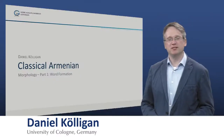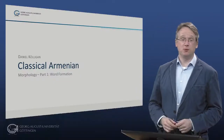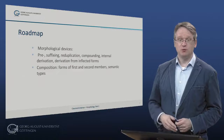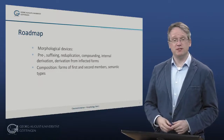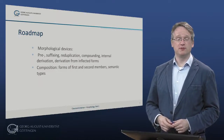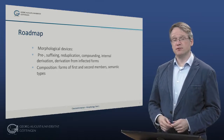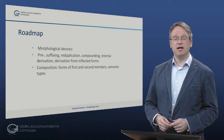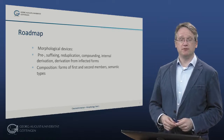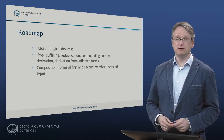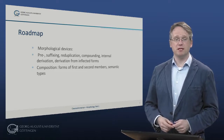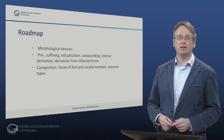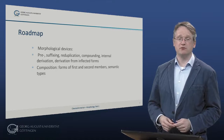Hello, I'm Daniel Kalligan and I welcome you to this lecture on Classical Armenian. In this part we will get to know some basic features of Armenian word formation. We will see which morphological devices the language uses to form new words. This includes pre- and suffixation, reduplication, compounding, internal derivation and derivation based on inflected forms. We will take a closer look at compounding and see how first and second members of compounds behave and which semantic types of compounds we find.